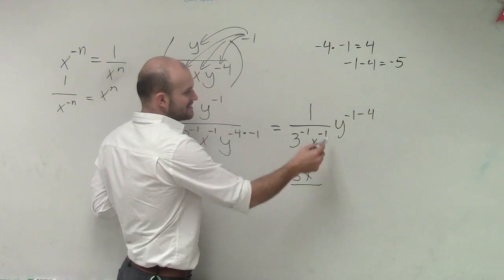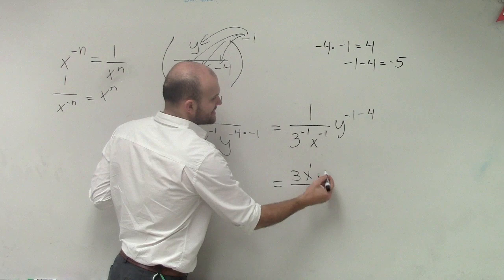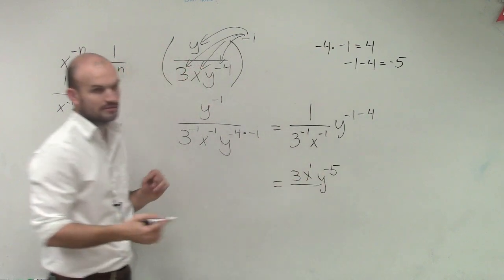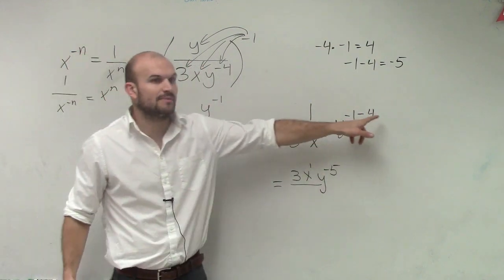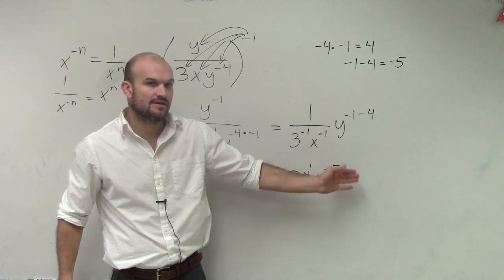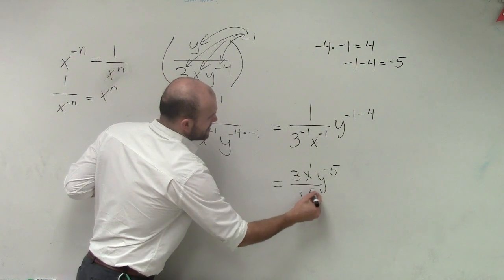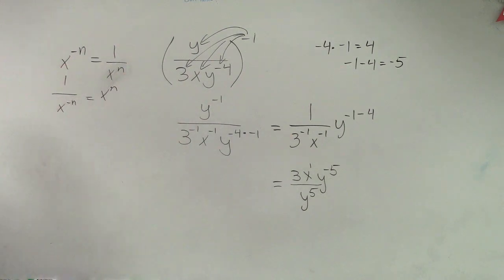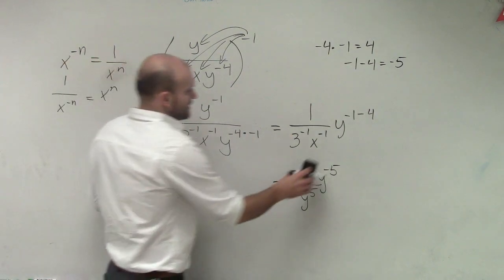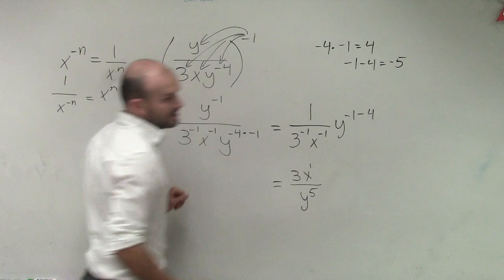But then, since this becomes y to the negative fifth power, right, because negative 1 minus 4 is y to the negative fifth, to answer this correctly, it needs to now go in the denominator as a positive exponent. So that is going to be your finalized answer.